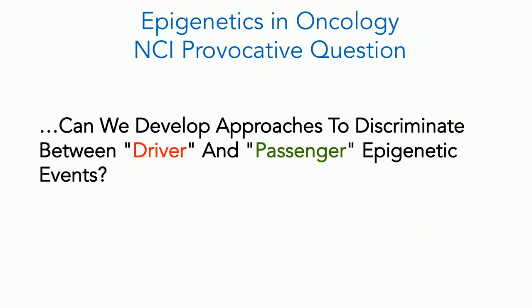We've been interested for a long time in chromatin gene regulation in cancer, starting with sequence-specific transcription factors. About seven or eight years ago, Dr. Varmus, when he was director of the NCI, started the provocative questions — one of them being: can we develop approaches to discriminate between driver and passenger epigenetic events? An epigenetic event might be some real big change in gene methylation, histone methylation, something like that.